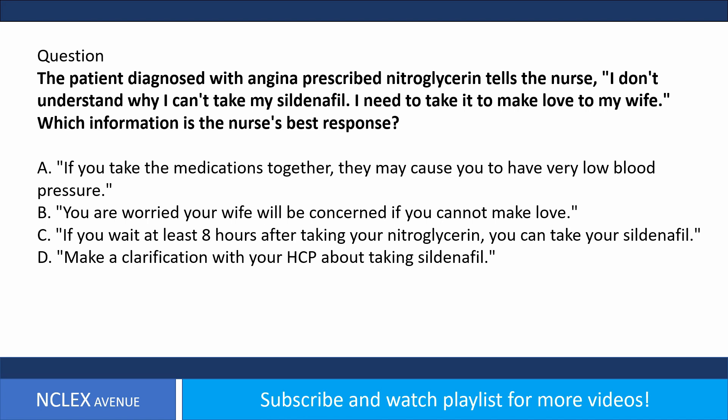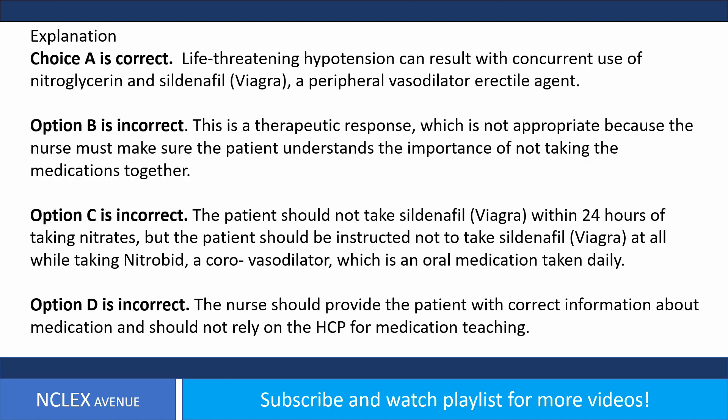Answer. Choice A is correct. Life-threatening hypotension can result with concurrent use of nitroglycerin and sildenafil (Viagra), a peripheral vasodilator erectile agent. Option B is incorrect. This is a therapeutic response, which is not appropriate, because the nurse must make sure the patient understands the importance of not taking the medications together. Option C is incorrect. The patient should not take sildenafil (Viagra) within 24 hours of taking nitrates, but the patient should also be instructed not to take sildenafil at all while taking nitrobid, a coronary vasodilator, which is an oral medication taken daily. Option D is incorrect. The nurse should provide the patient with correct information about medication and should not rely on the HCP for medication teaching.